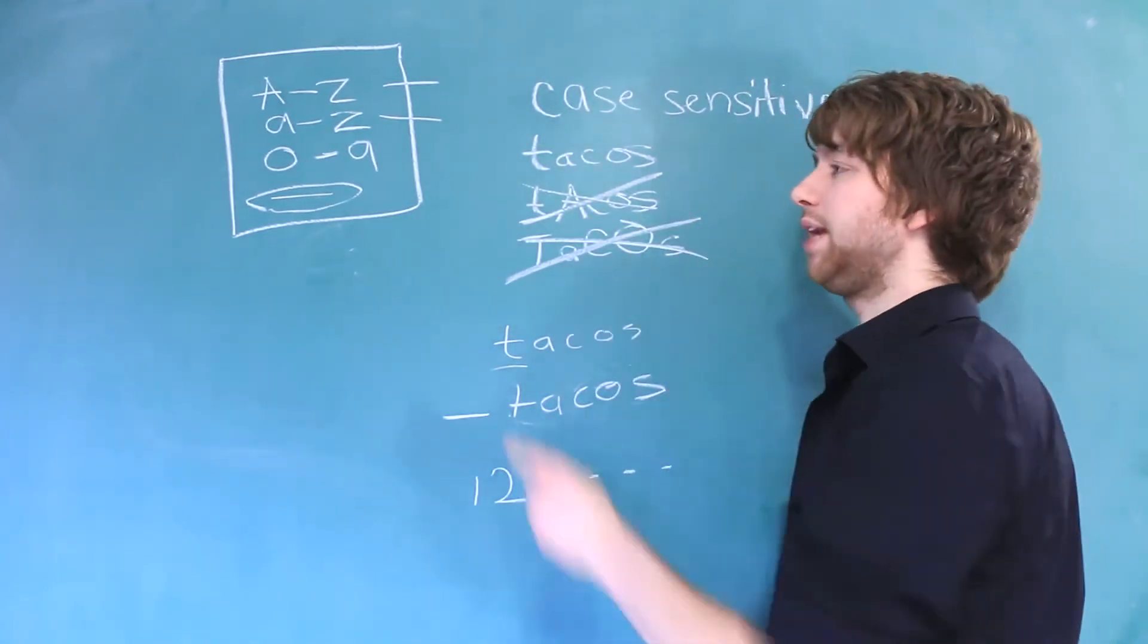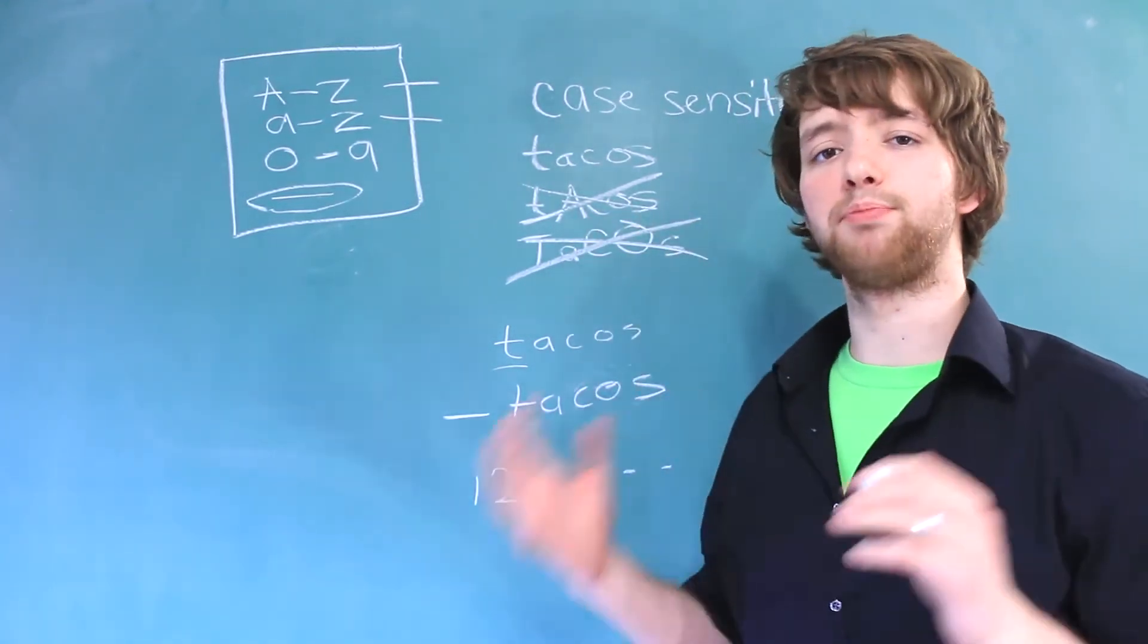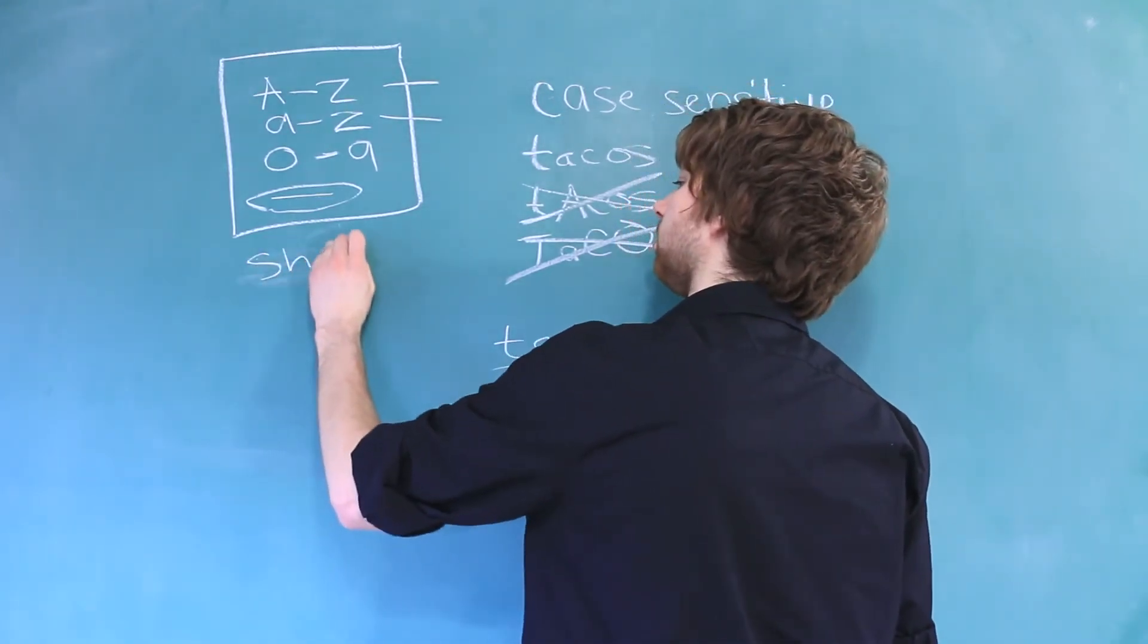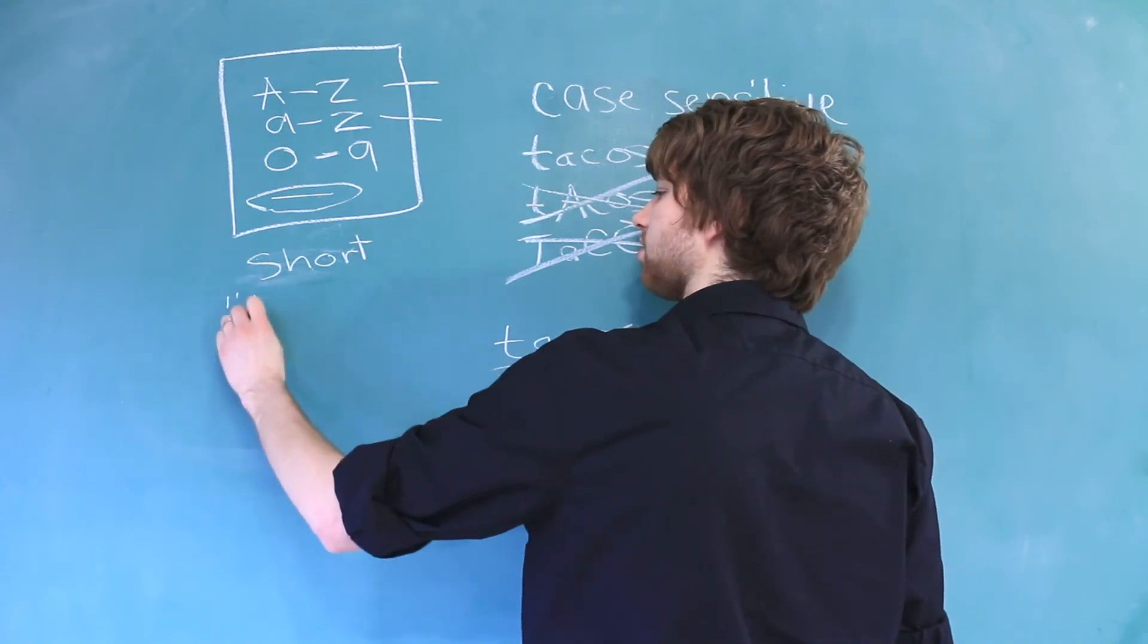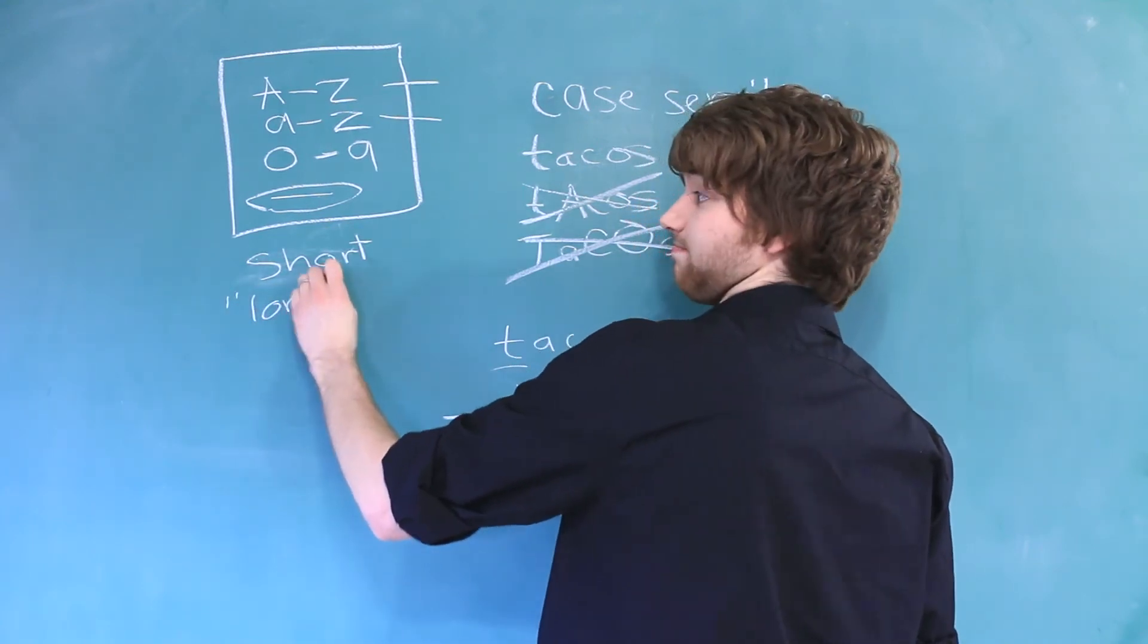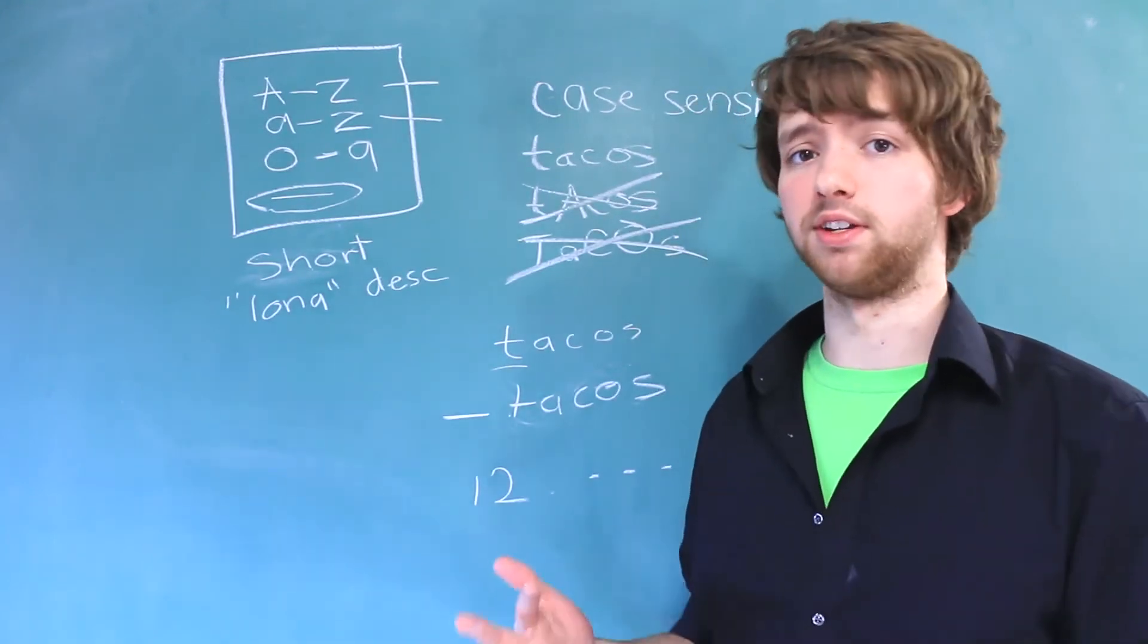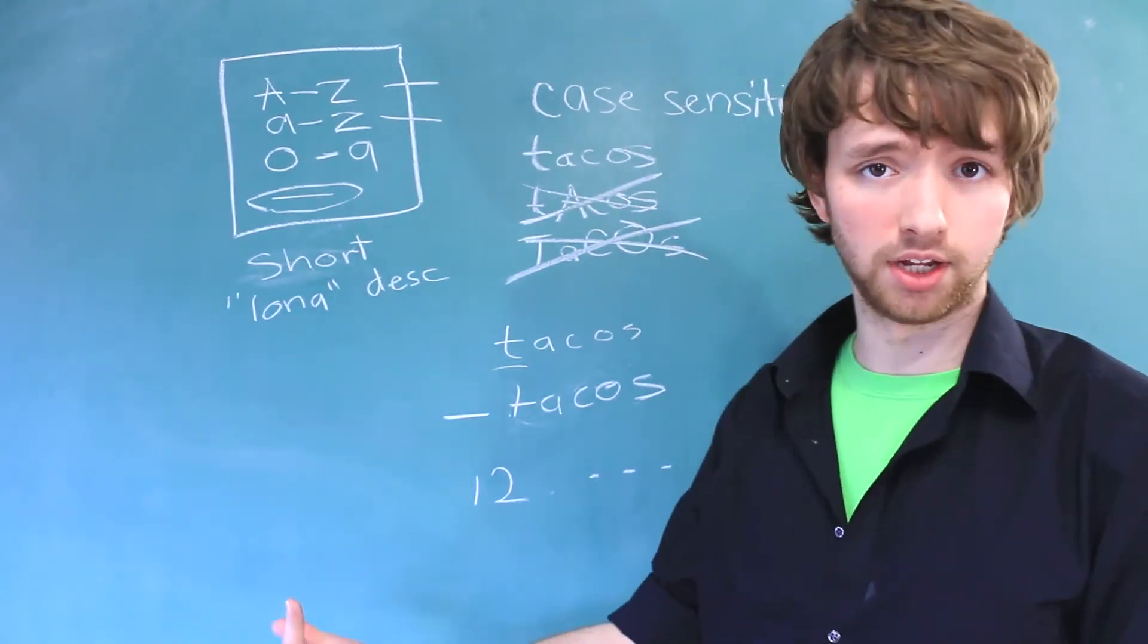Now, when it comes to what you should name your variables, you want to keep a balance on length and description. So you want it to be short in length, but I guess you could say long in description, if that makes any sense at all. So I'm going to give you some variable names, and I want you to decide, are they good variable names or are they bad variable names?